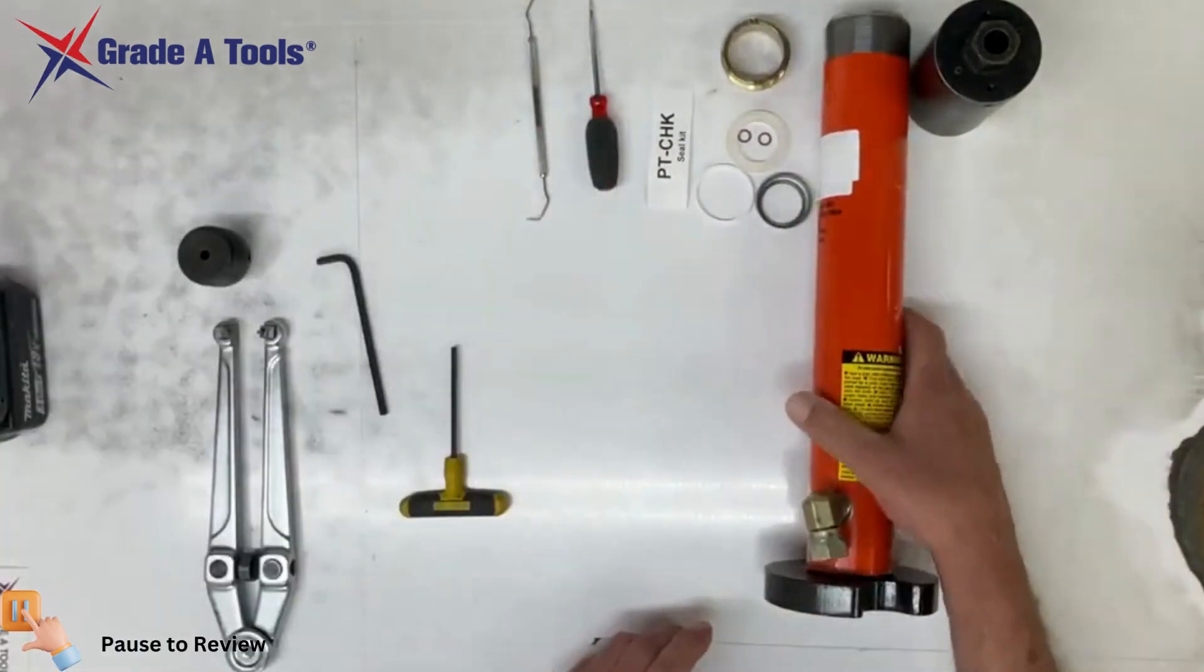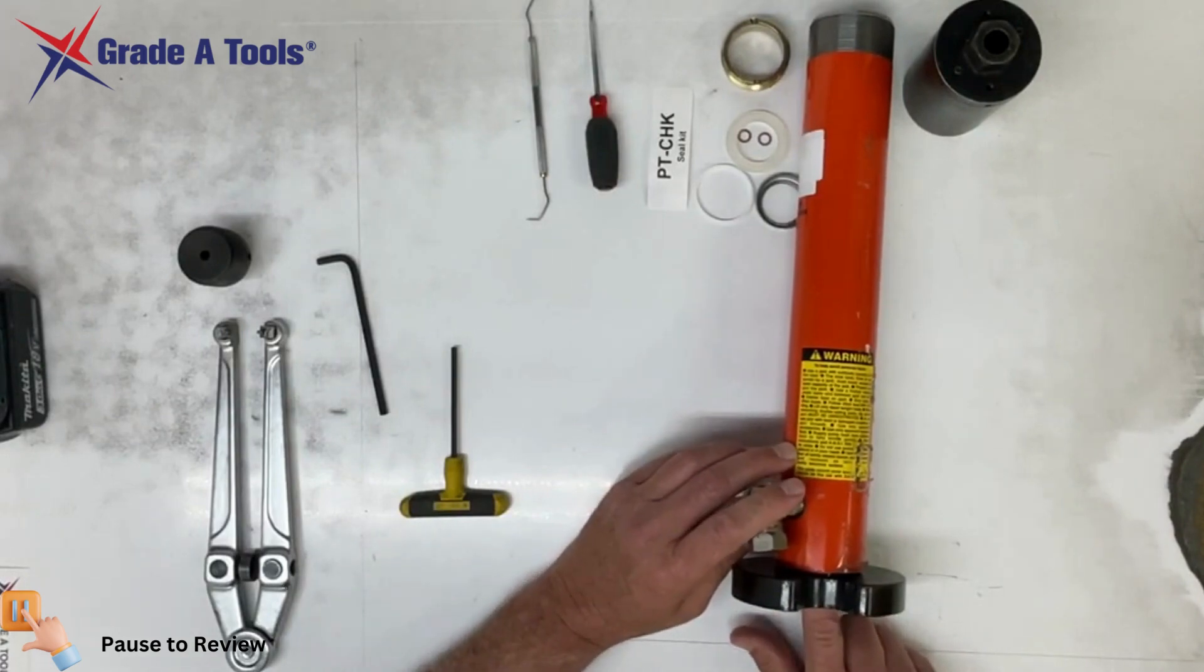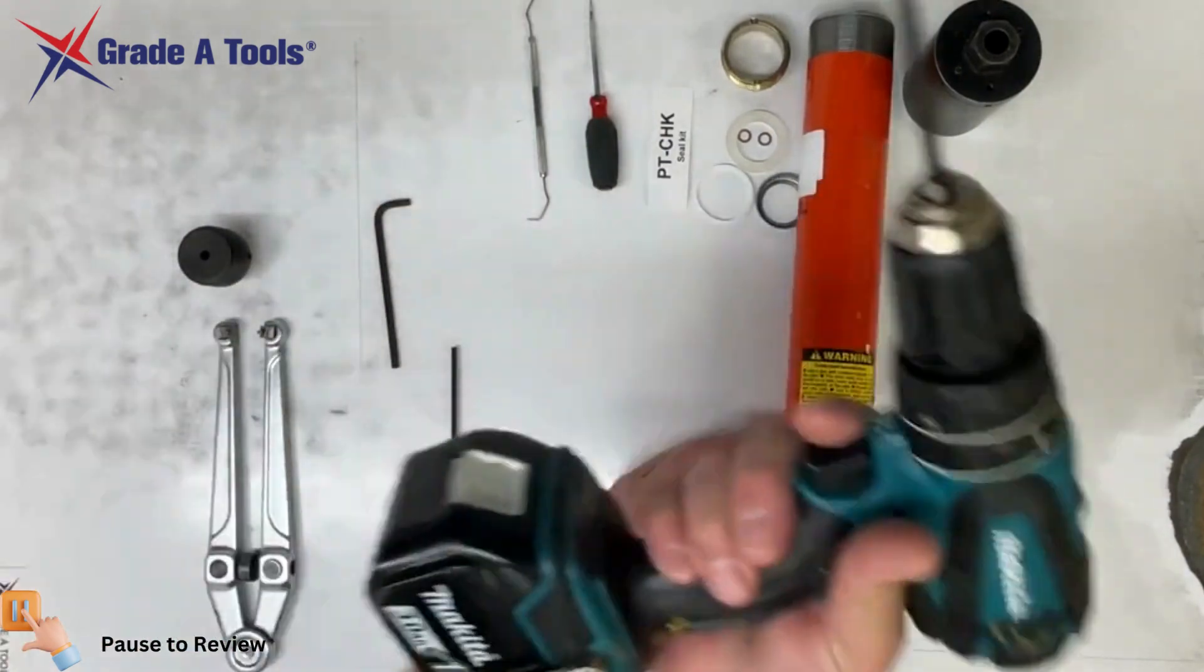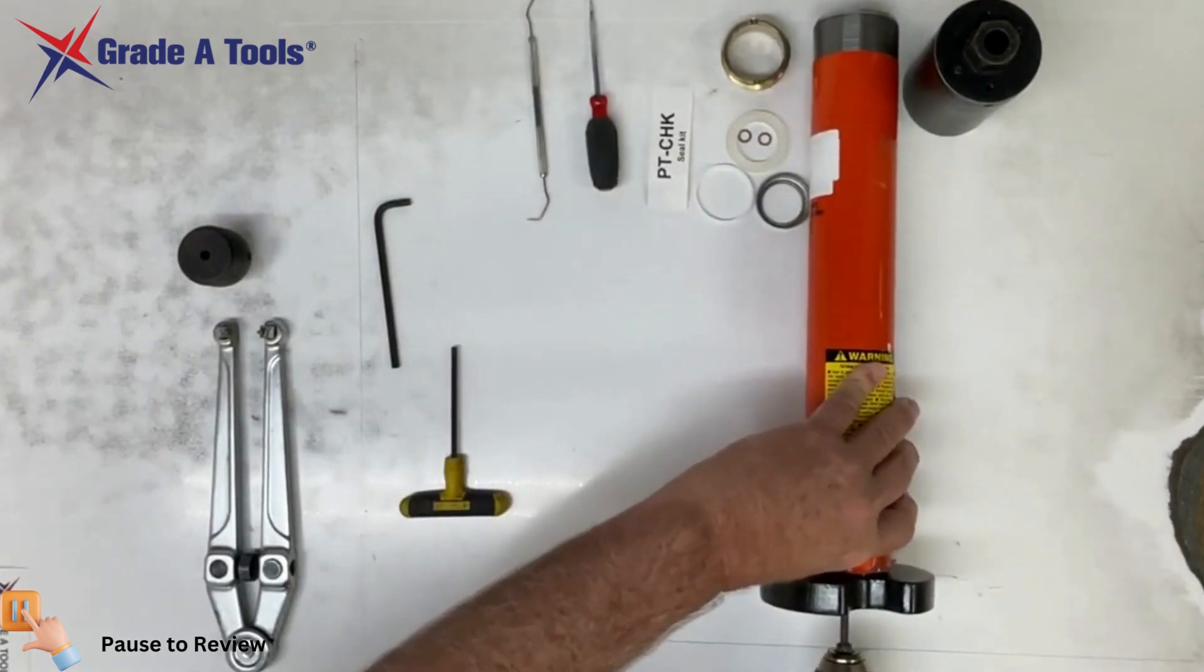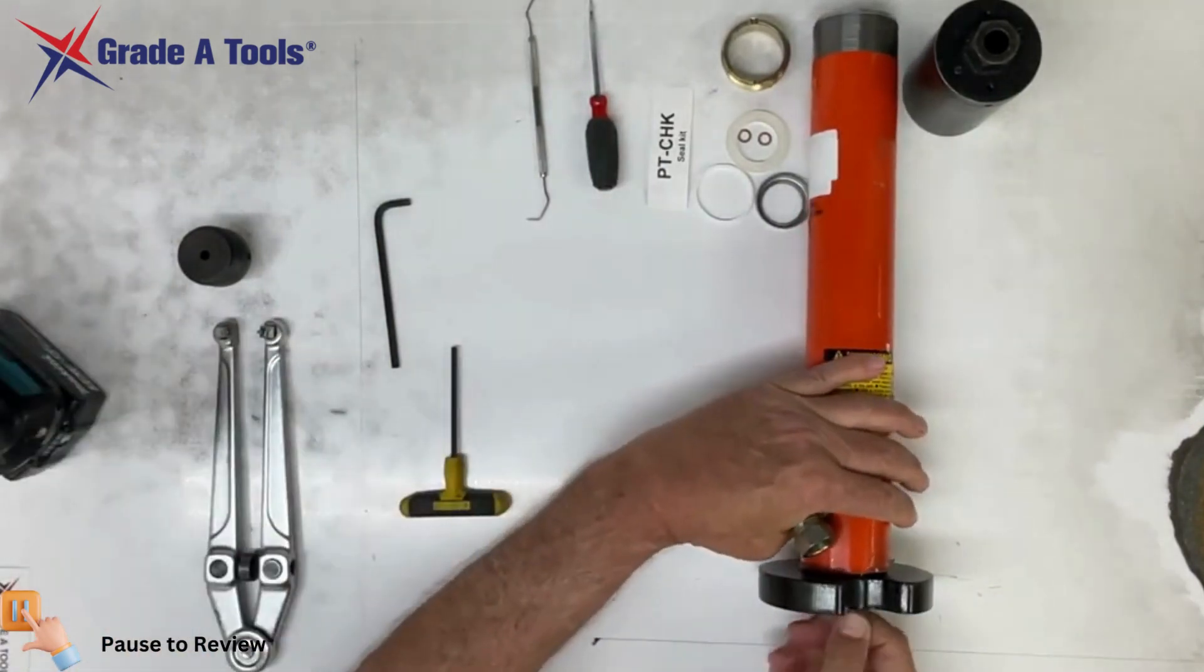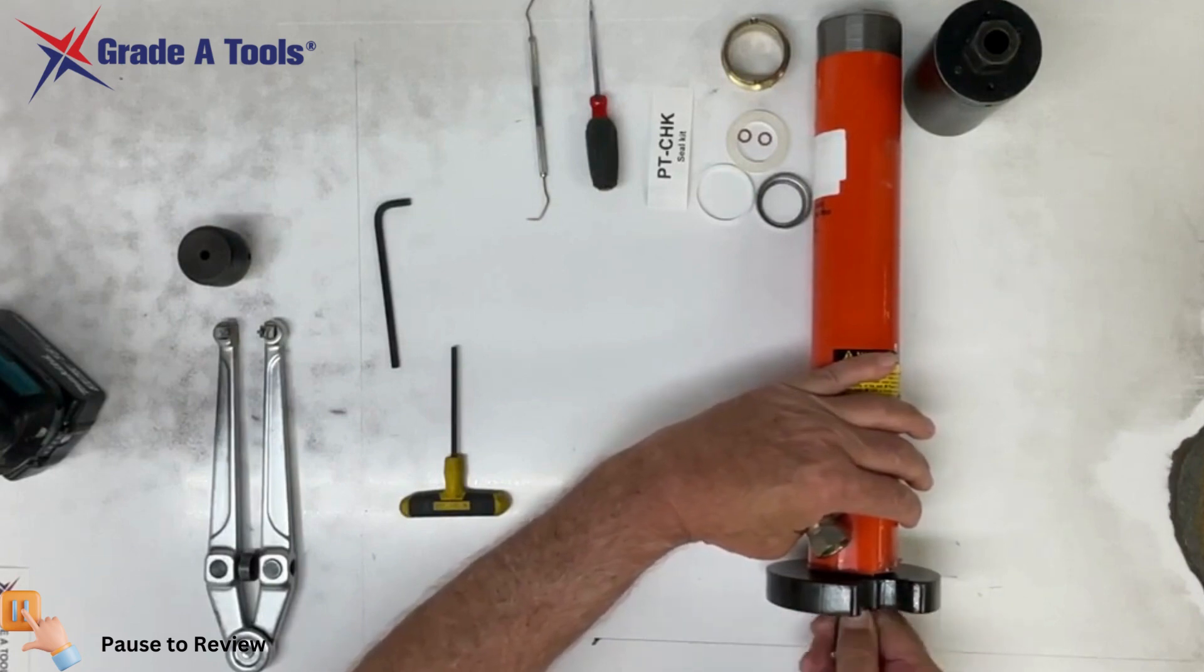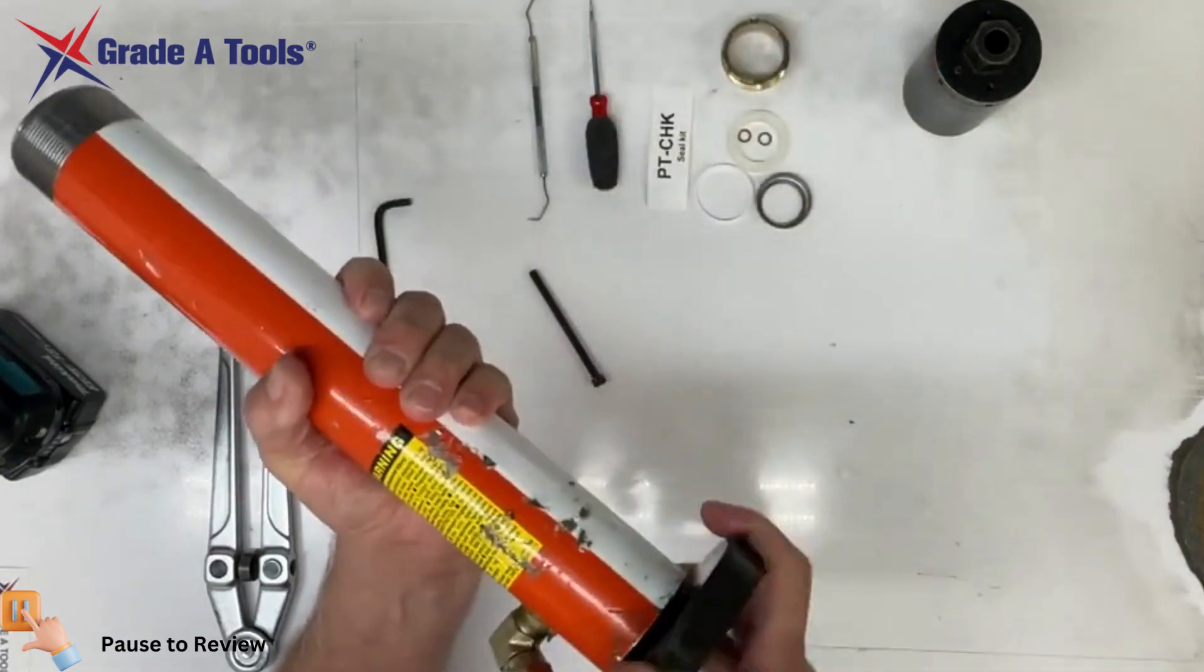Next, we're going to remove the threaded bolt. This bolt is about three and a half to four inches long. Once you have broken the bolt loose with an Allen wrench, we have specially designed an Allen wrench for this. We're going to take this nut out, and you can see that this is quite a long nut.